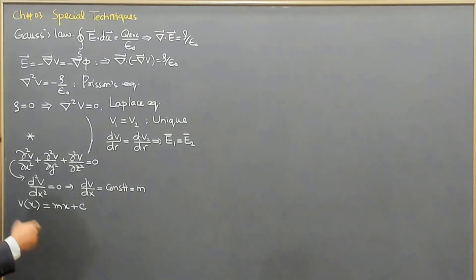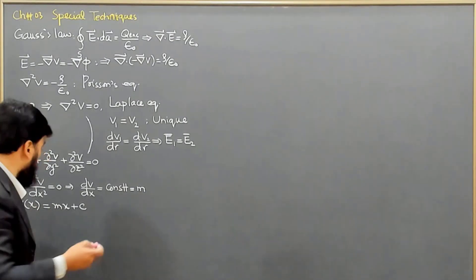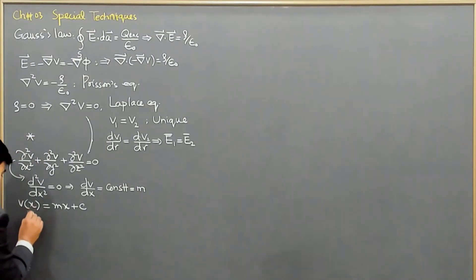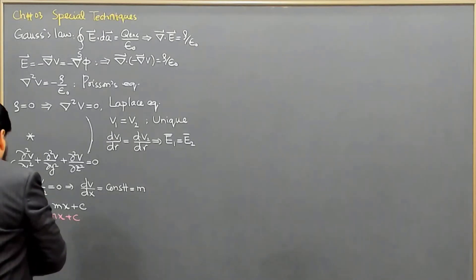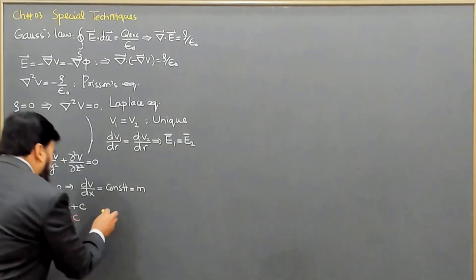Now, this equation is basically resembling the equation of a straight line like we write y equals mx plus c, where c is the y-intercept. So, this tells us that if we are having...